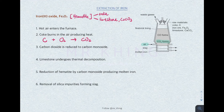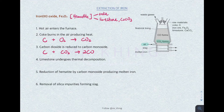Higher up the furnace, there will be insufficient oxygen. Therefore the carbon dioxide produced will get reduced to carbon monoxide. Carbon reacts with carbon dioxide to form carbon monoxide: C + CO2 → 2CO. You have to make sure the chemical equation is balanced.